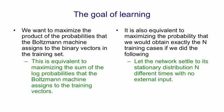It's also equivalent to maximising the probability that we'd obtain exactly the n training cases if we ran the Boltzmann machine in the following way. First, we let it settle to its stationary distribution n different times with no external input. Then we sample the visible vector once. Then we let it settle again and sample the visible vector again, and so on.